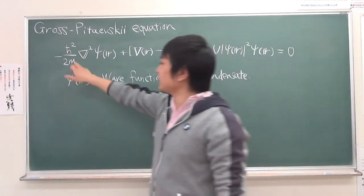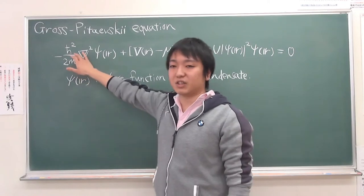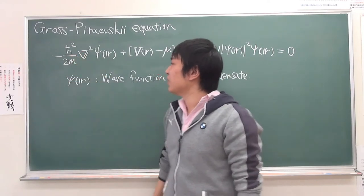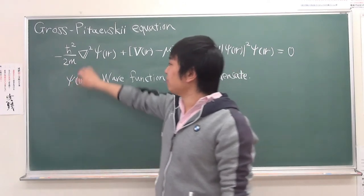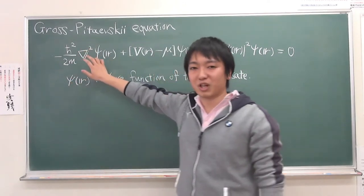H-bar is Planck's constant, and M is the mass of the particle forming the Bose-Einstein condensate. This one here is the Nabla operator.